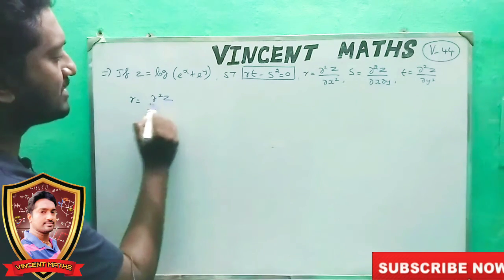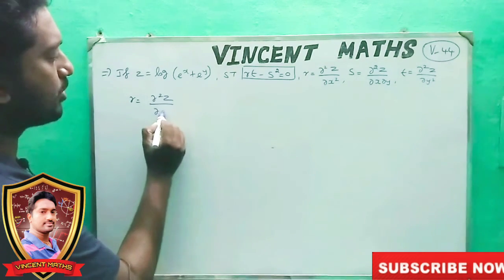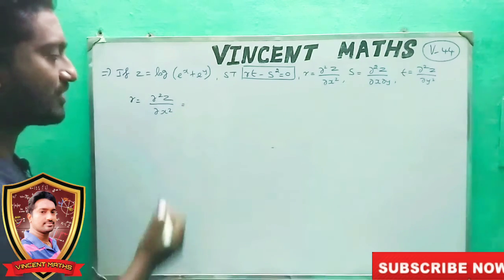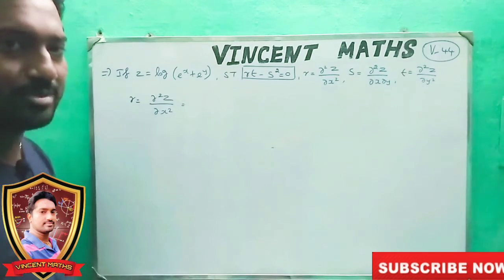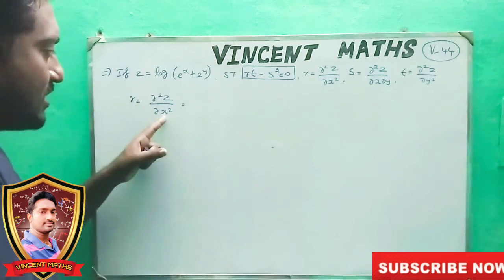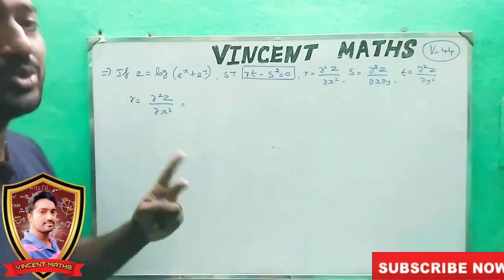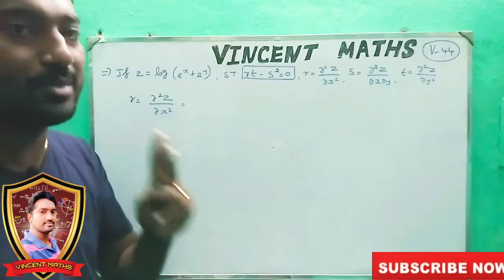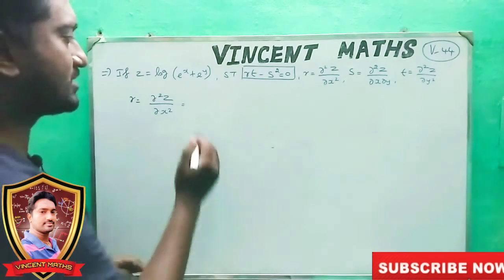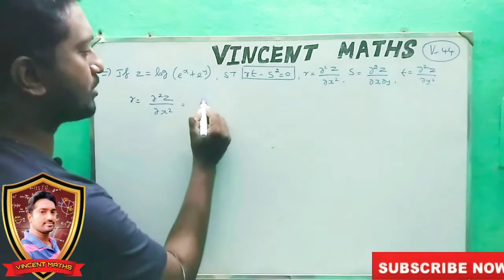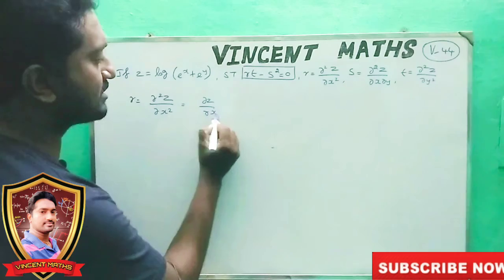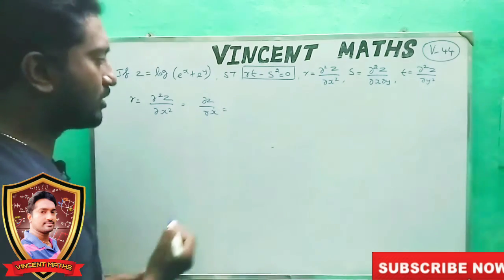dou squared z by dou x squared. We can differentiate. First, we differentiate dou z by dou x. This is the value.